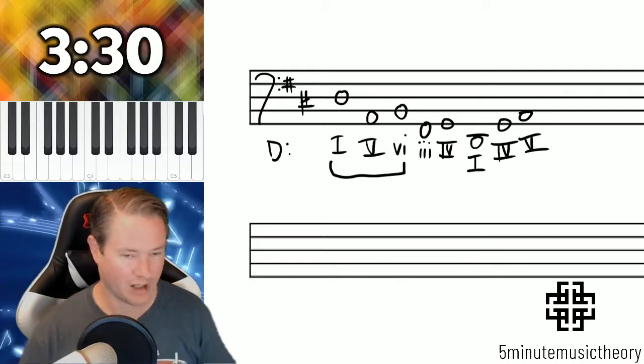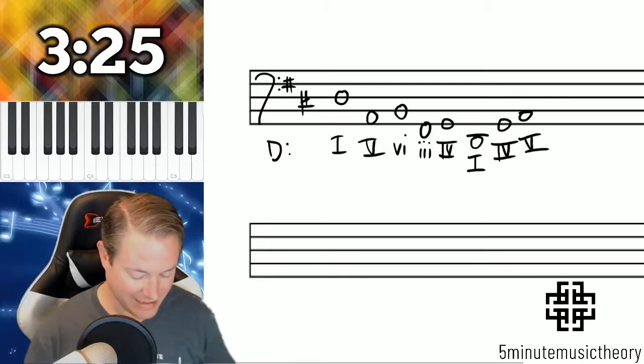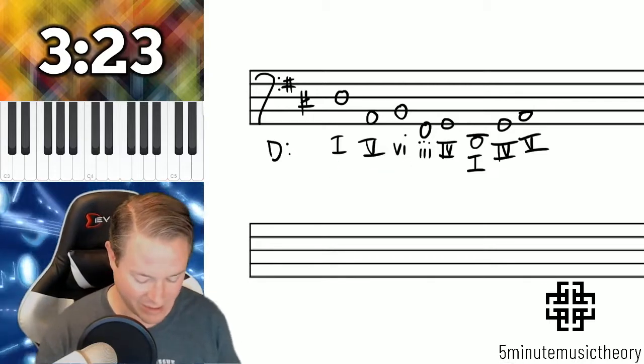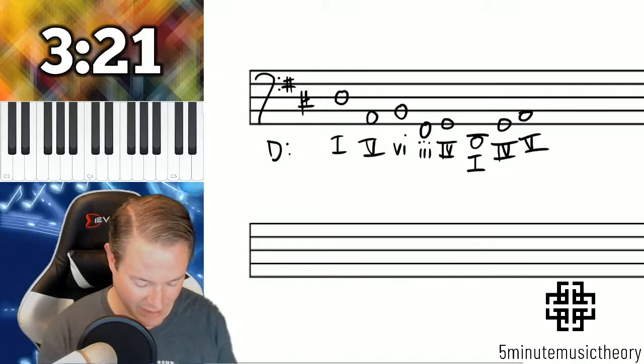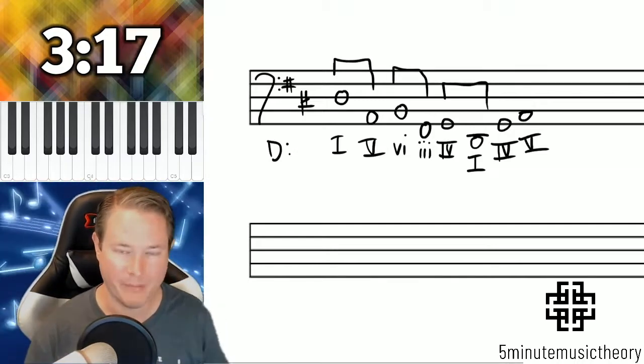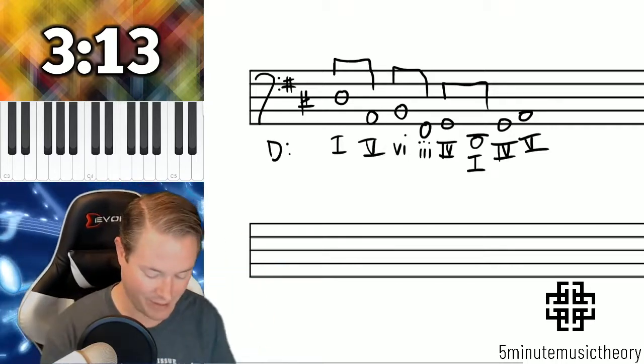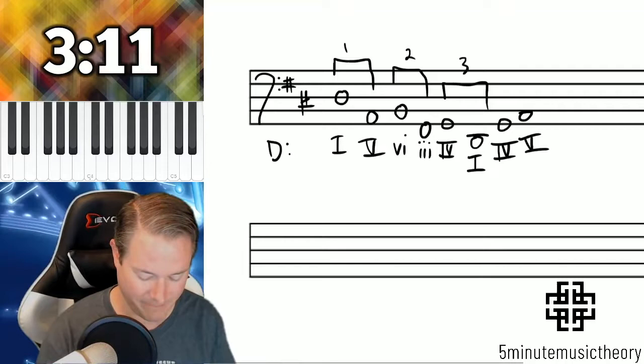That's the bass line to Johann Pachelbel's Canon in D, one of the most recognizable tunes in existence. So what happens here is there's three iterations of this pattern. The pattern is dropping that fourth and then up a step, and it happens one, two, three times.